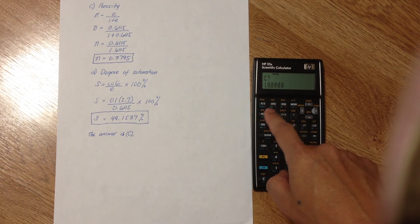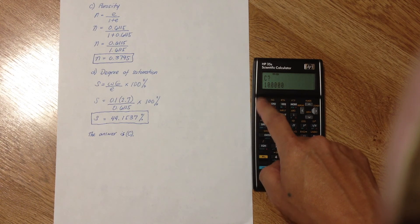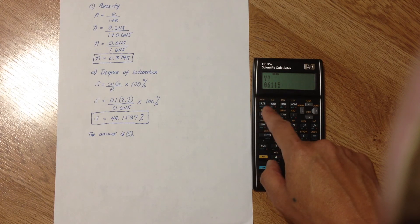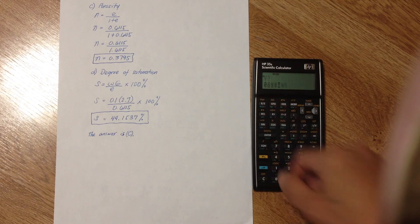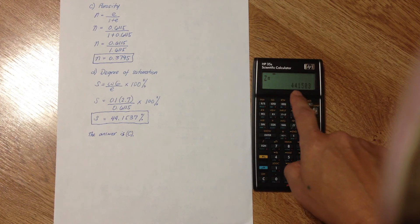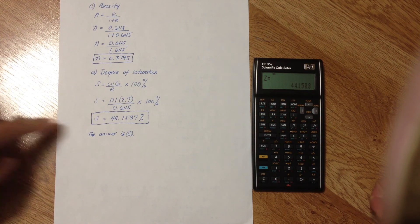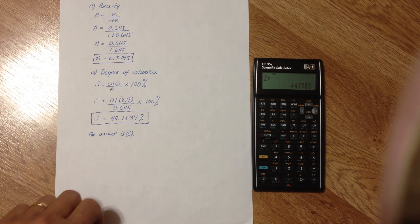Just press Enter. And accept everything. So, C, RS, G, RS, V. We've already calculated that, so just press RS. And there you go. That's the degree of saturation, 44.1503. It's close enough. So, the answer is C.